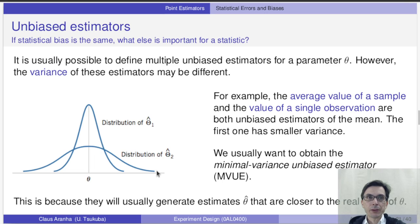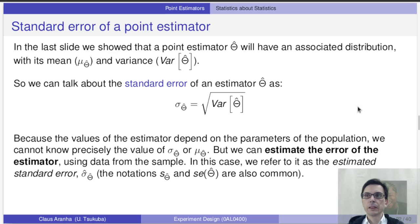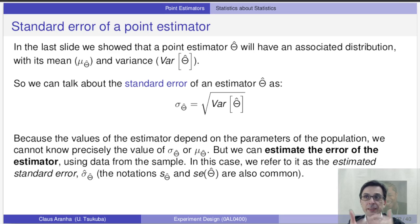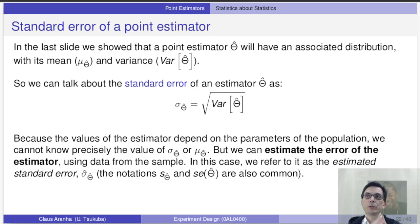All these estimators are unbiased, but some of them have higher variance than others. Some estimators will have a very big variance, some estimators will have a very small variance. Usually we want an estimator that is both unbiased and has a variance that is as small as possible. Since we want an estimator with as small variance as possible, this means that we can calculate the standard error and the variance of an estimator. Note that we are not talking about the standard error of the sample or of the observation or the population — we are talking about the standard error of the estimator itself.